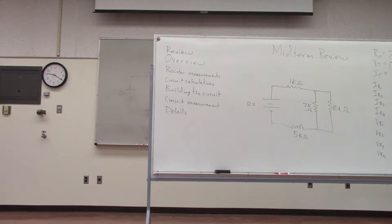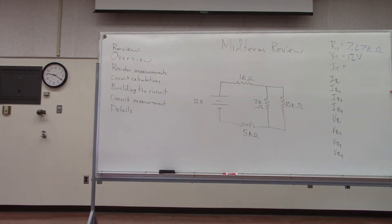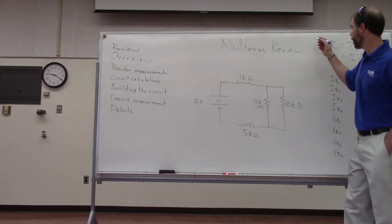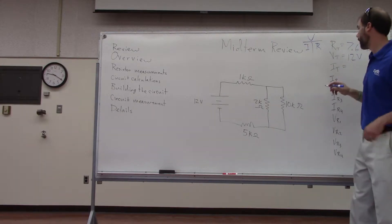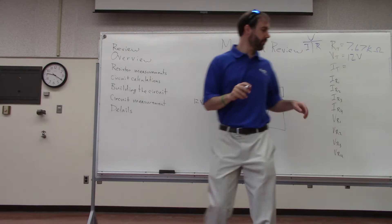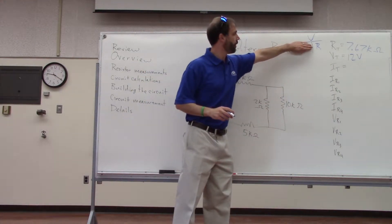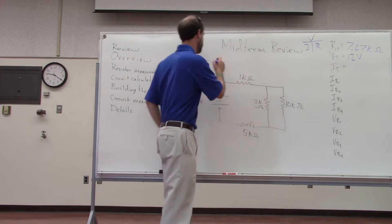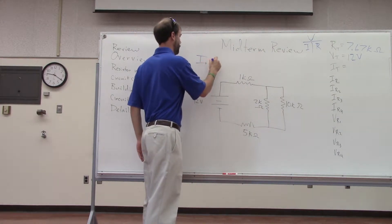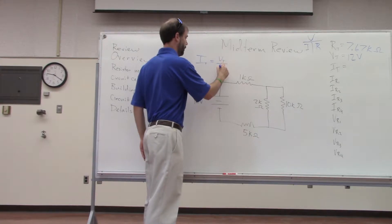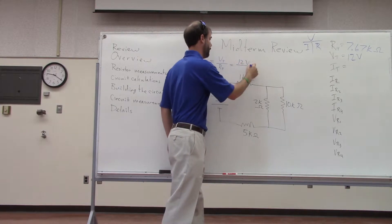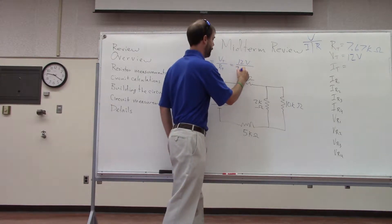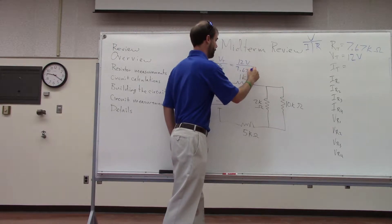Can we find I_total? Yes — Ohm's law. V equals I times R, so we cover I and get I equals V over R. That is 12 volts over 7.67 kilohms.